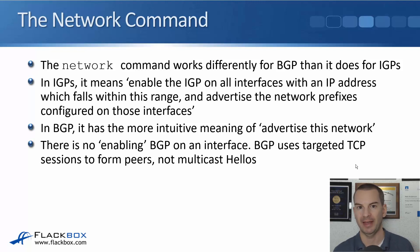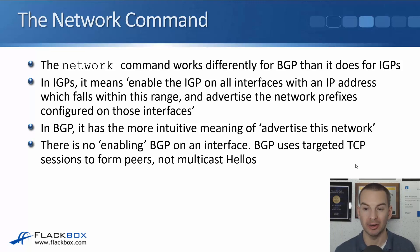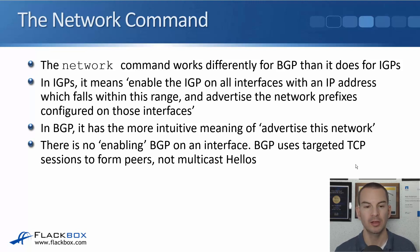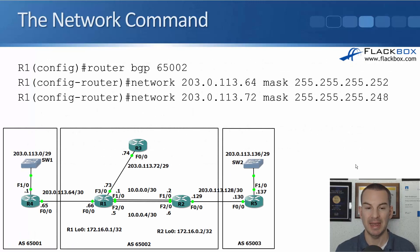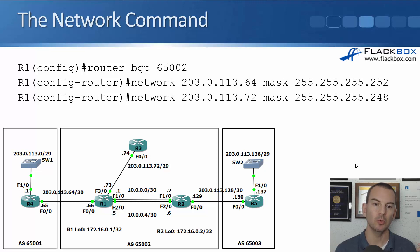In IGP it actually does have the intuitive meaning: just advertise this network. There's no enabling BGP on an interface — BGP uses targeted unicast TCP sessions to form peers based on your neighbor statements. It doesn't use multicast hellos. So the network command does not mean turn on BGP on an interface. We individually specify neighbors, and the network statement just literally means advertise this network.